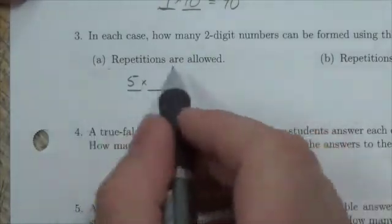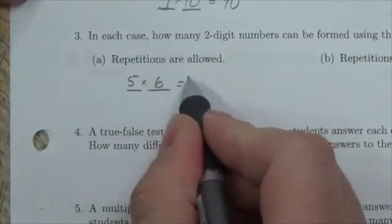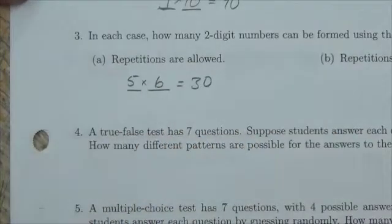But beyond that, it doesn't matter, and I'm allowed to repeat them, so I can put six different options right here, and so the total is 30. There are 30 different numbers I can make with that.